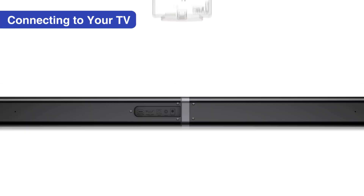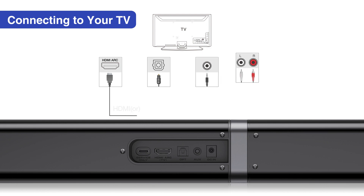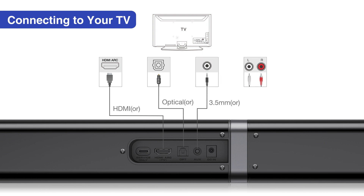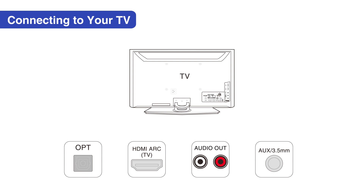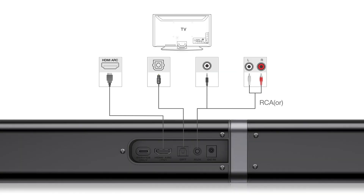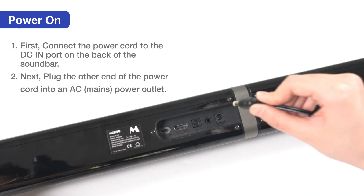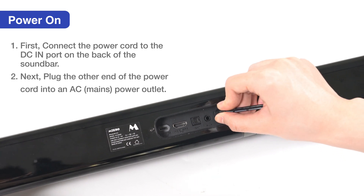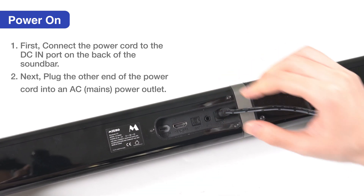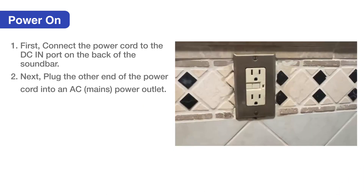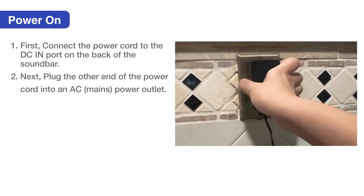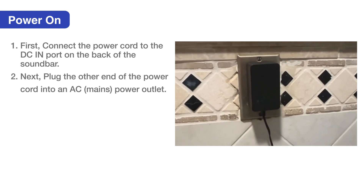TV connectivity. The KY2020D supports multiple audio formats. You can connect the soundbar by HDMI ARC, optical, 3.5 mm auxiliary audio, or 3.5 mm auxiliary to RCA. To power on: first, insert the power adapter into the DC in port on the back of the soundbar. Next, plug the other end of the power adapter into an active power source. We recommend using a wall plug as a power source.